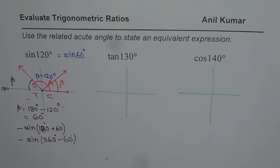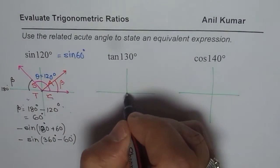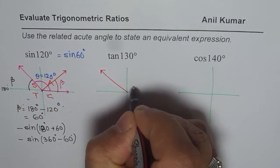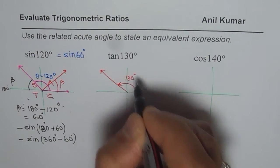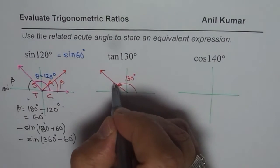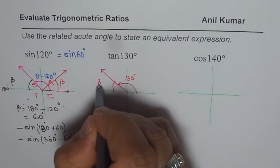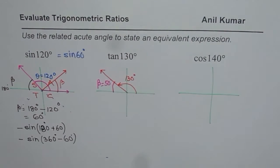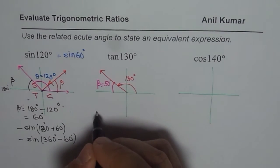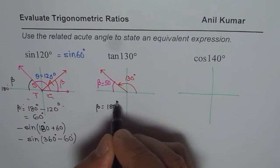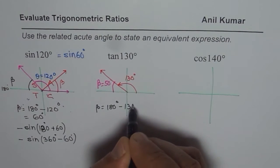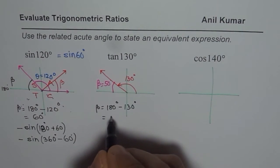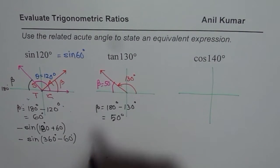Now let's look at tan of 130 degrees. That means we are again in quadrant 2. The angle is 130 degrees. So what is beta? Beta equals 180 minus 130, which is 50 degrees. The acute angle beta equals 180 degrees minus 130 degrees, which equals 50 degrees.